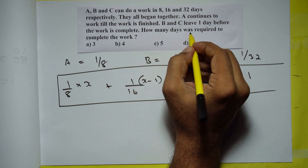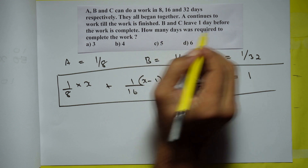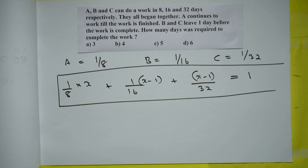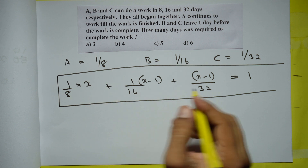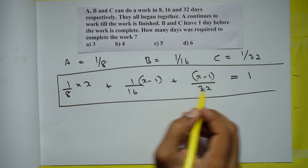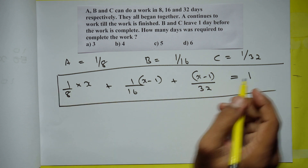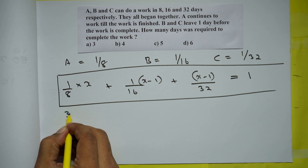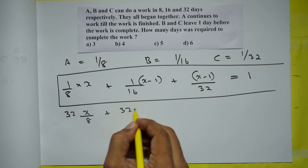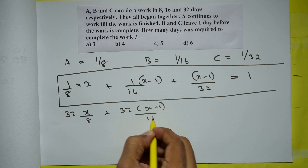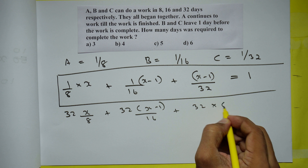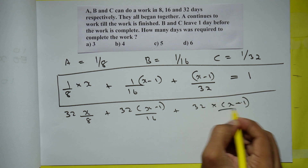So the value of X is what we need to calculate. We will multiply by the LCM of 8, 16 and 32, which is 32, so all the denominators will cancel. Multiplying by 32: 32X/8 plus 32(X−1)/16 plus 32(X−1)/32.